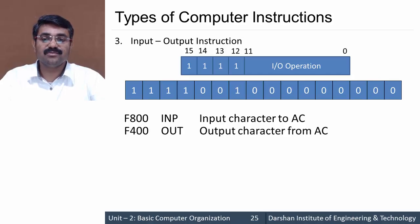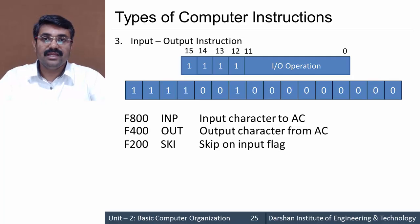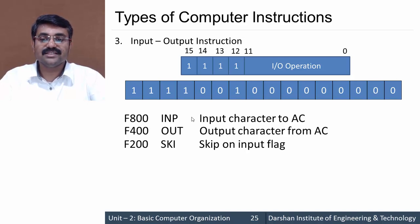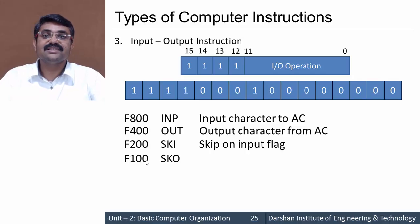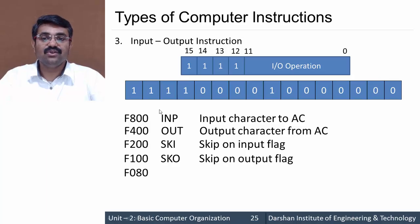Code F200 is designated as SKI — skip on input flag. The input flag determines whether an input operation is occurring; this instruction skips the next instruction based on that flag. Details will be discussed when covering interrupts. Code F100 is SKO — skip on output flag, skipping the next instruction when the output flag is set.